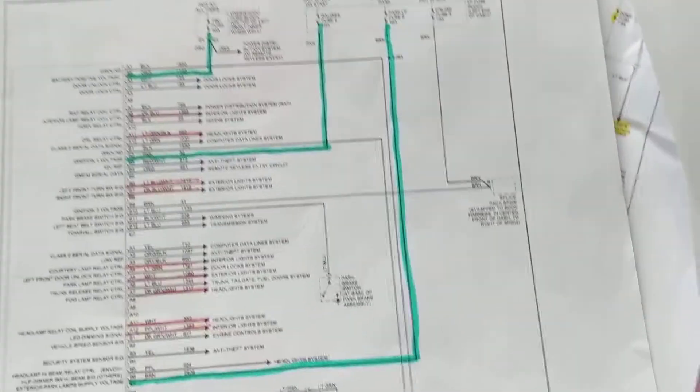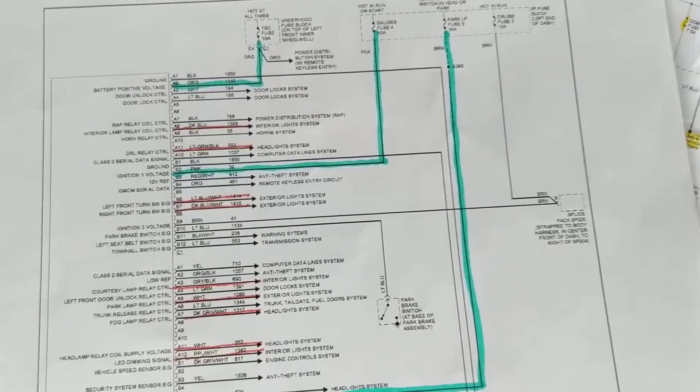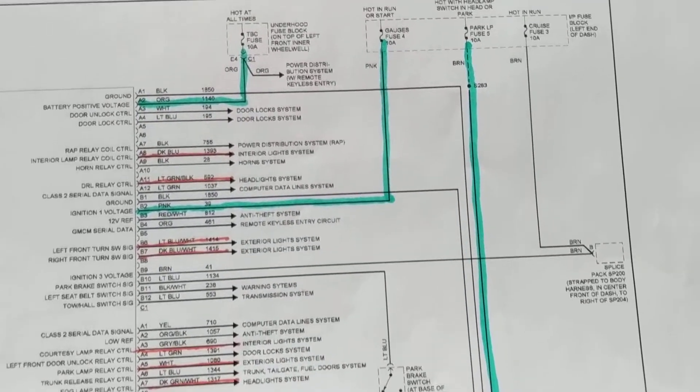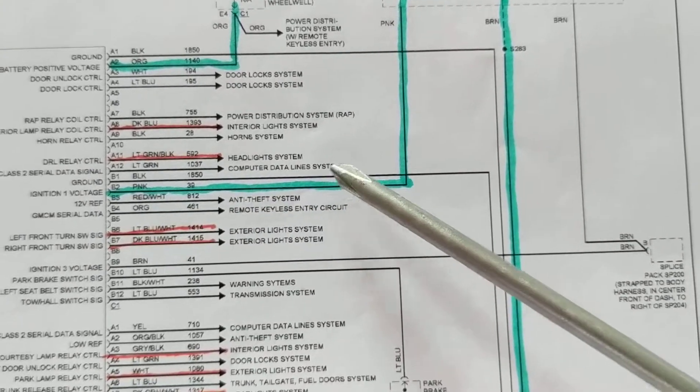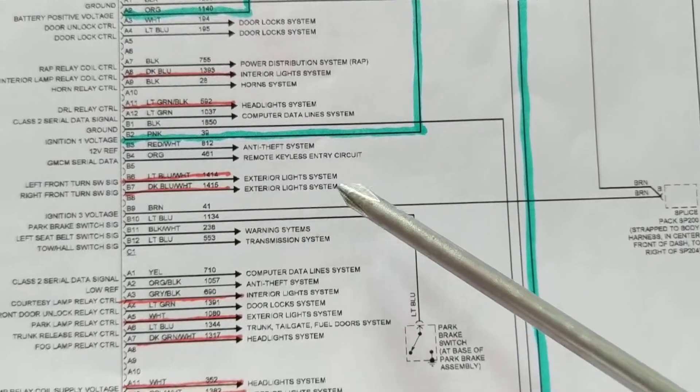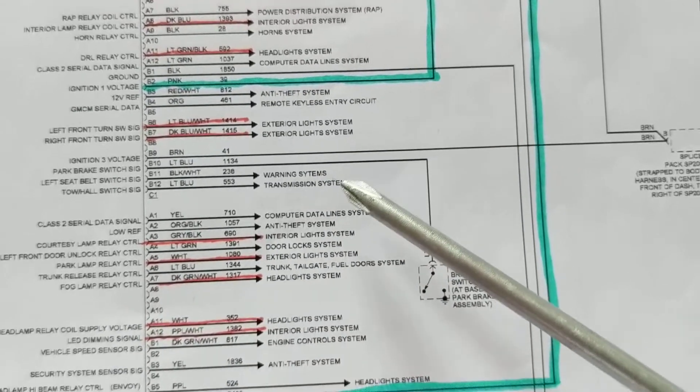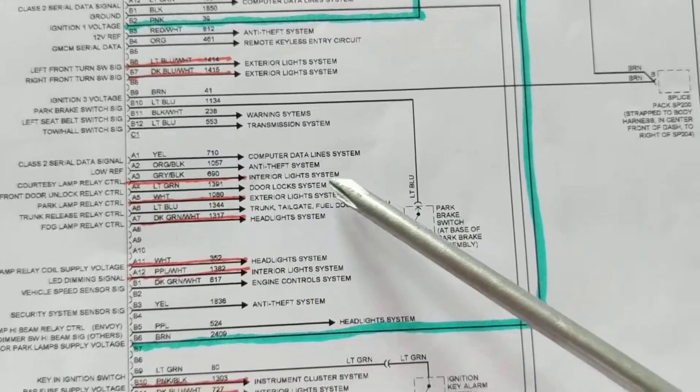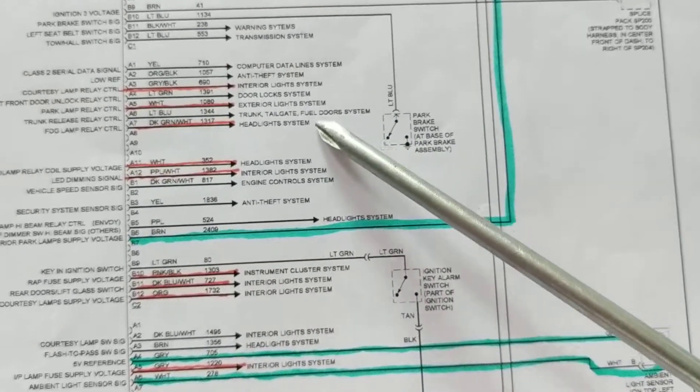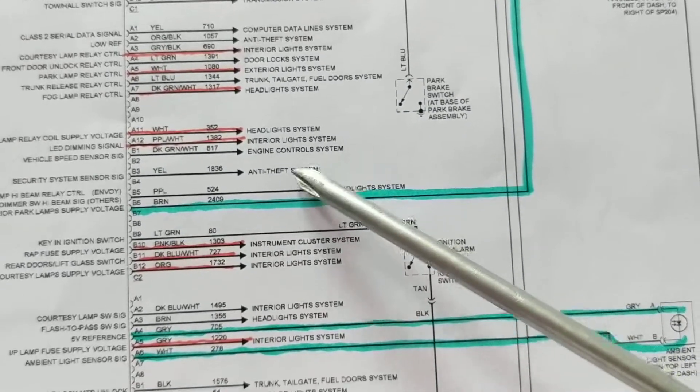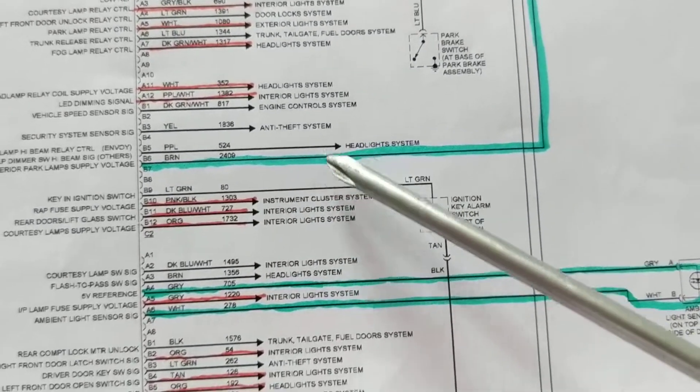This is part two actually. As we said, a body control module is responsible for accessories like you see over here - headlights, remote keyless entry circuit, exterior lights, warning systems, computer data lines. Every model has computer data lines, interior engine control, anti-theft.